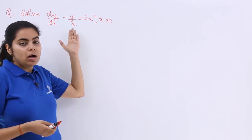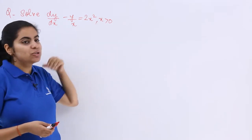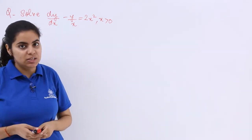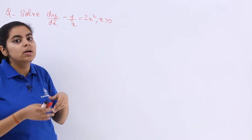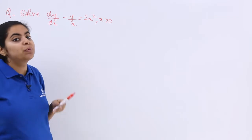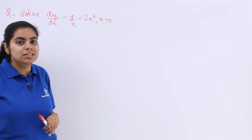It says solve dy/dx - y/x = 2x² where x > 0. Now one thing is very clear that this is a linear differential equation form wherein we can compare it with the general form of the equation. What is the general equation?